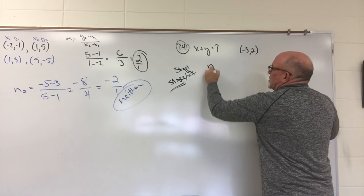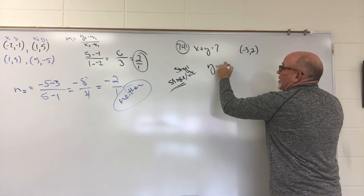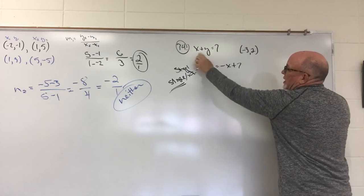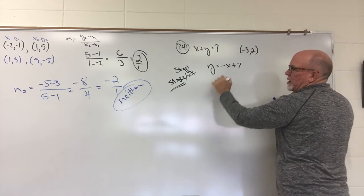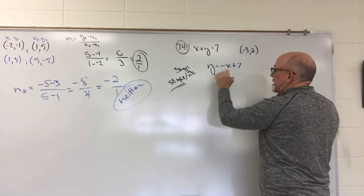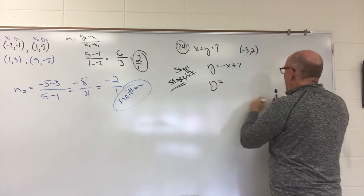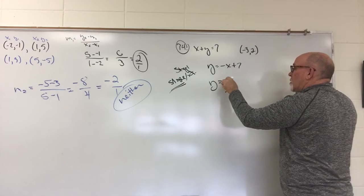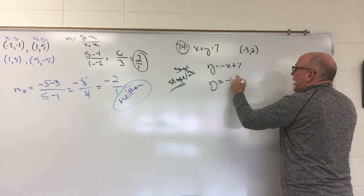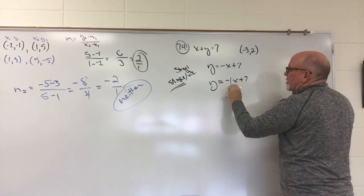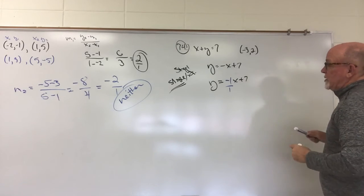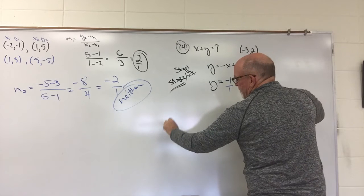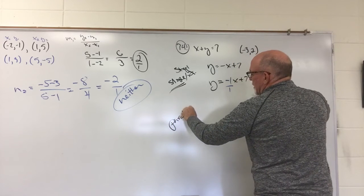So, in slope-intercept, it is y equals a negative x plus 7. When the x comes to the other side, it's negative. I want the fraction that is in front of, or between the negative sign and the x. So, that is y equals a negative 1x plus 7. And, actually, we're going to make it fractional and make it a negative 1 over 1.